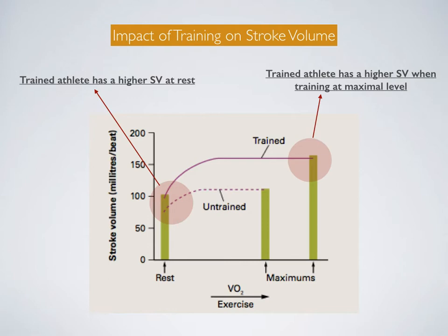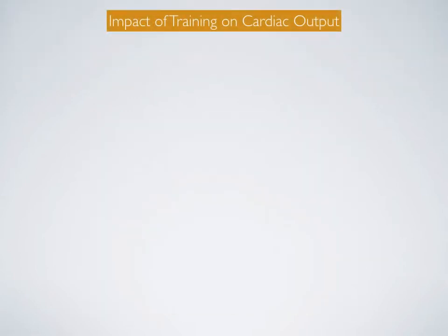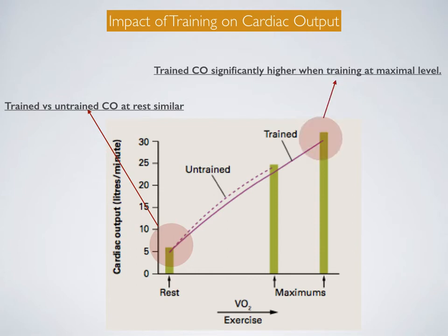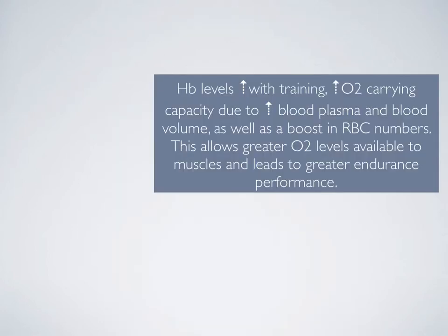So stroke volume increases as a result of training. For cardiac output, you can see in this graph that at rest, cardiac output is actually similar for the trained and untrained athlete. However, when training at maximal level, the cardiac output for the trained athlete is significantly higher. Again, more oxygen is able to be delivered to those working muscles, improving performance in endurance events.